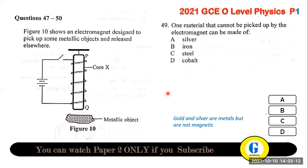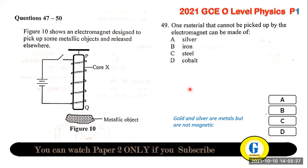Question 49: one material that cannot be picked up by electromagnets is gold or silver. These are metals but they are non-magnetic materials, so an electromagnet cannot pick them up.